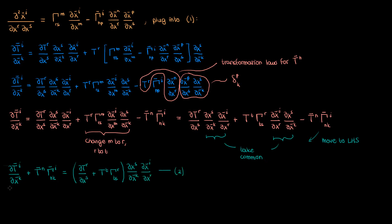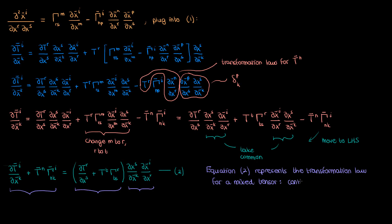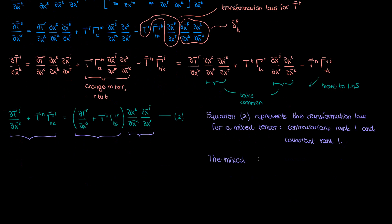Let's analyze equation 2. The whole quantity on the left — which involves the partial derivative of my contravariant tensor component with respect to a coordinate, as well as a transformed second-kind Christoffel symbol — is basically the barred version of the whole quantity in parentheses on the right. To go from the unbarred term in parentheses to the barred term, you multiply by two partial derivative terms: one with a barred coordinate on top and one with a barred coordinate on the bottom.